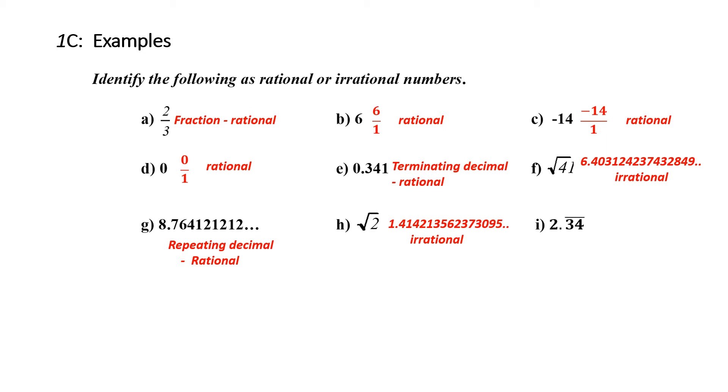Finally, 2.34 with a line over it, that line means repeating. Therefore this is a rational number because it is a repeating decimal.